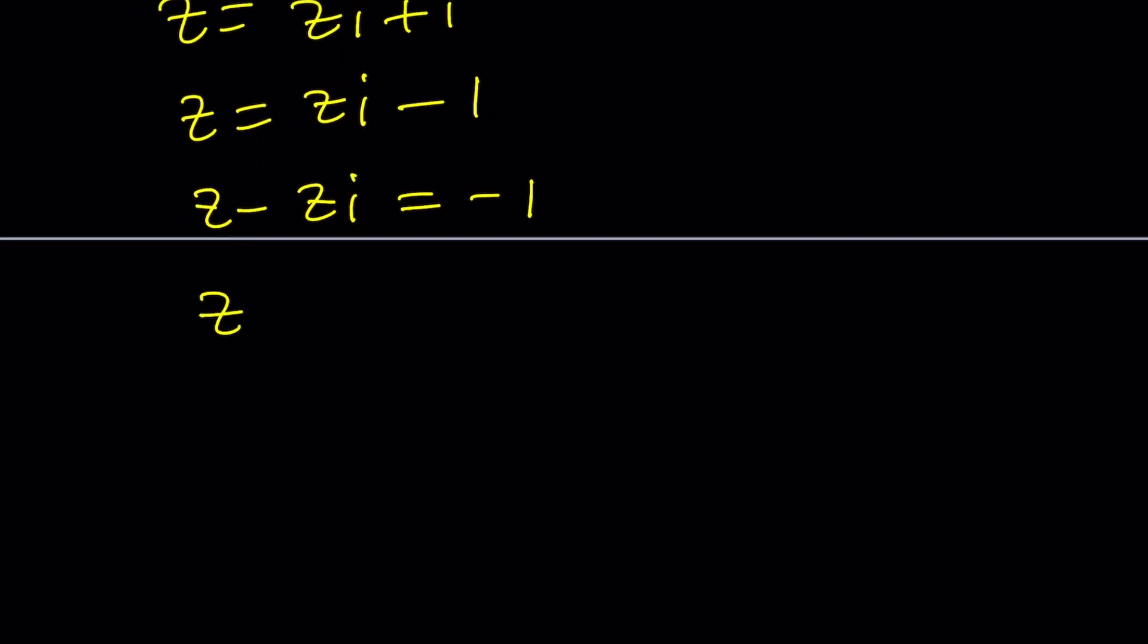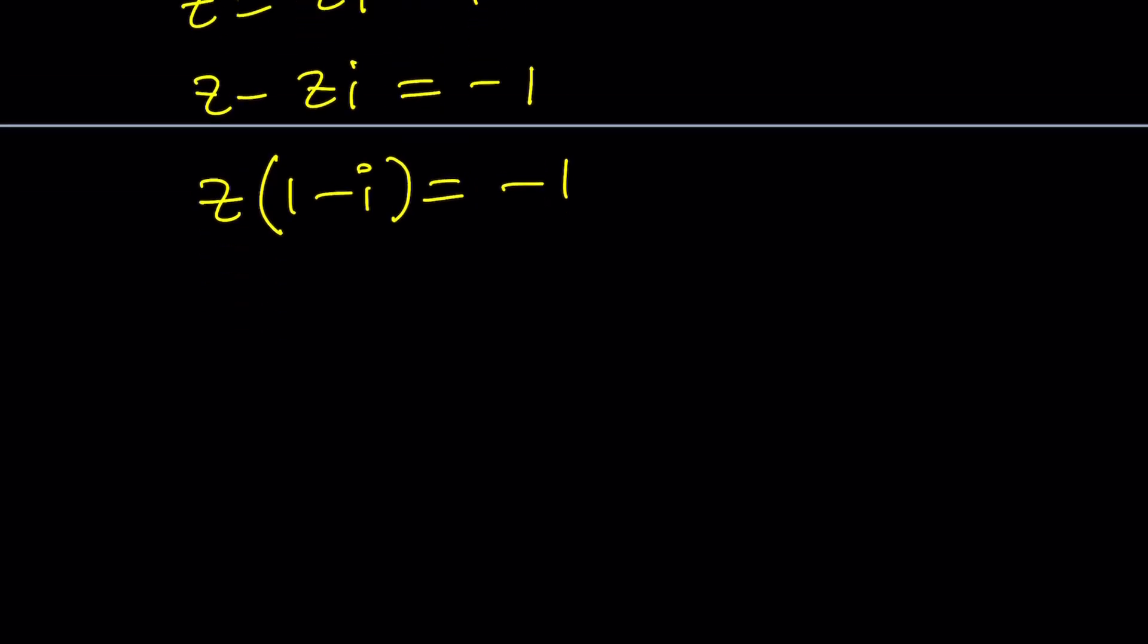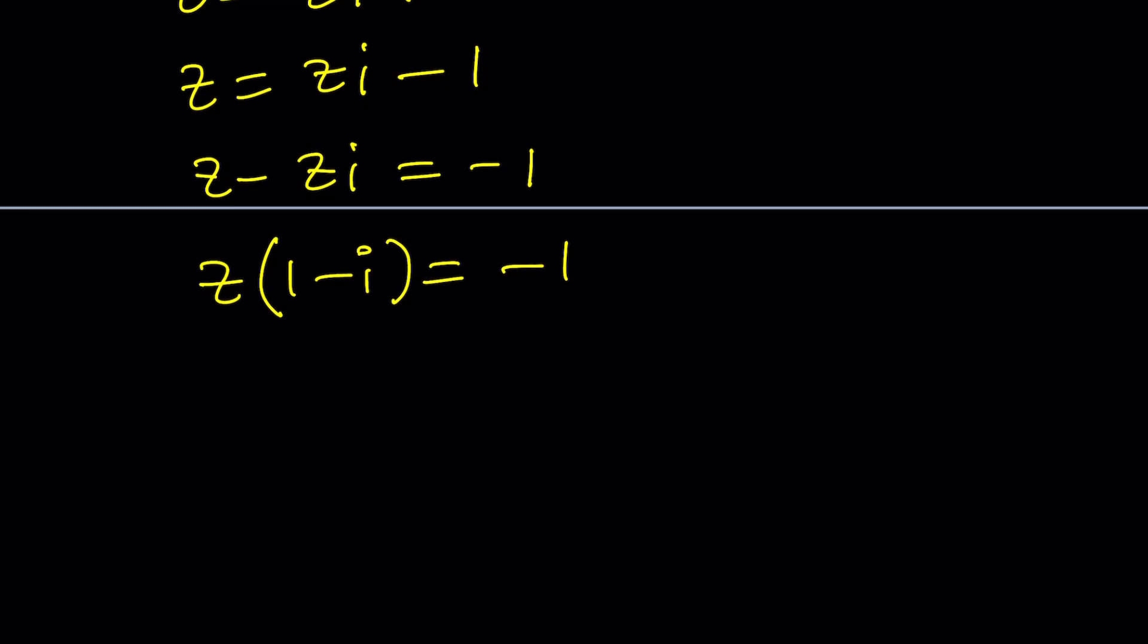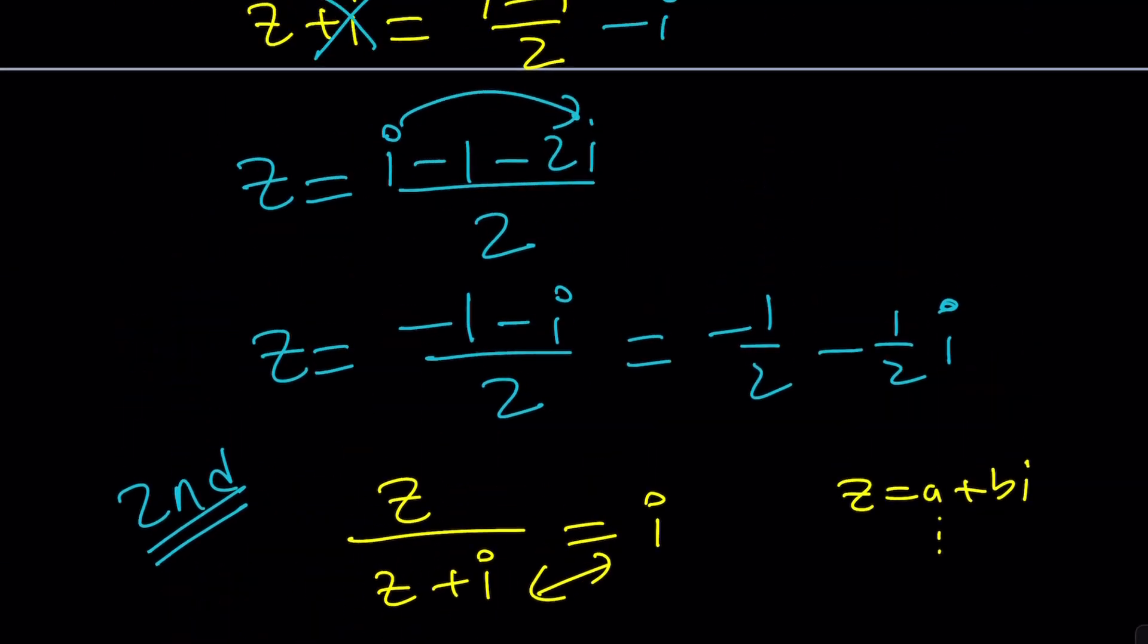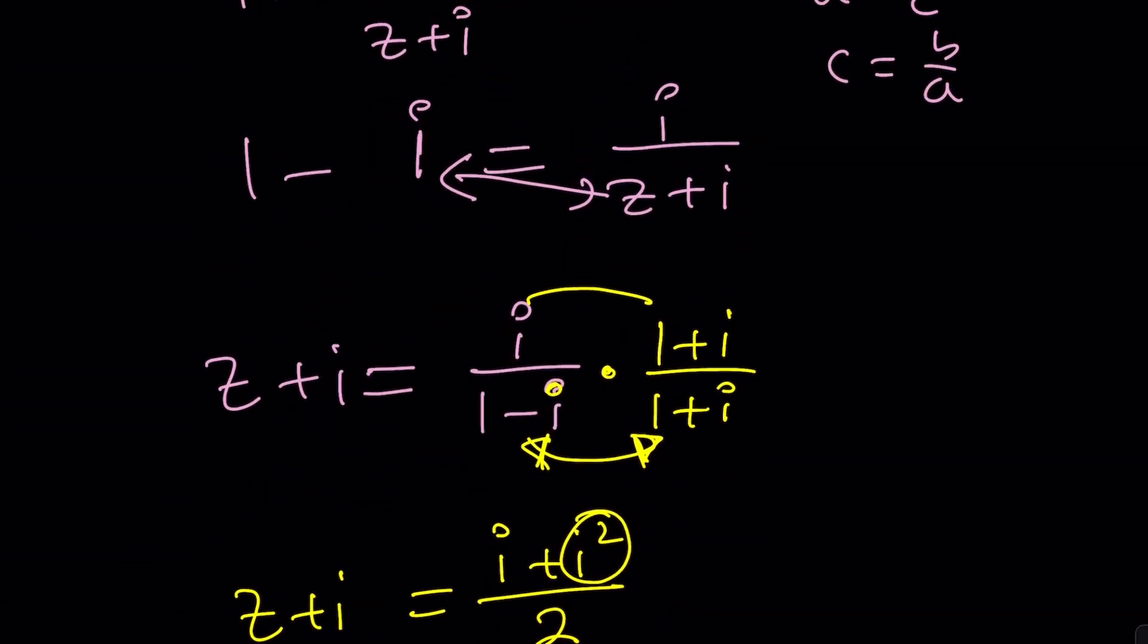But this gives me a nice complex number. That's Z. I can factor out a Z. And now I'm one step away from finding the Z. All I have to do is divide both sides by one minus I. And that's going to give me negative one divided by one minus I. Does that look familiar?